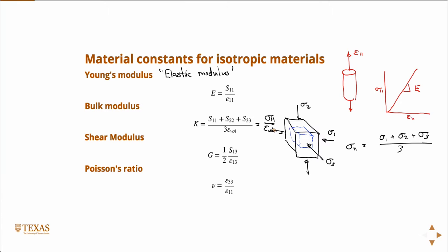The Young's modulus is a measure of the material's resistance to unidirectional or one-dimensional stretching. So the Young's modulus is the material's inherent resistance to stretching in one direction. The bulk modulus is the material's inherent resistance to hydrostatic compression. If I squeeze from all sides, the bulk modulus is the inherent material property that resists that.